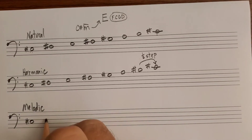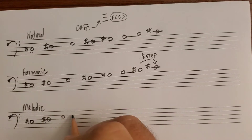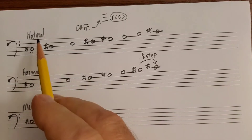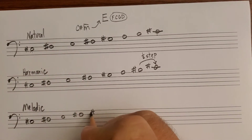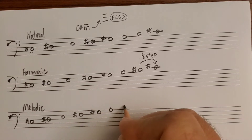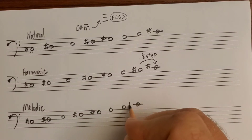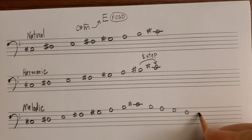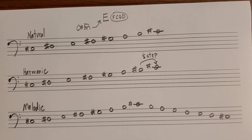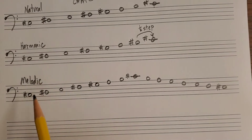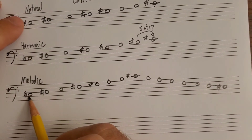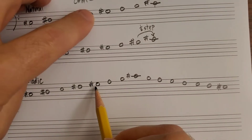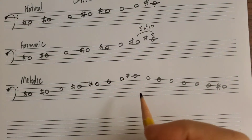For melodic minor, again start with natural minor first — make sure you don't start with harmonic minor. Write the natural minor scale and also write the descending form, filling in the accidentals later. Remember to begin and end on the same pitch, so make sure you end on C sharp, not C natural. Confirm you have natural minor with the same notes.